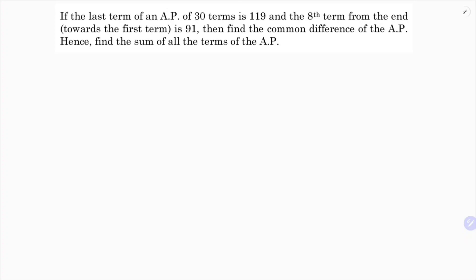The last term of an AP of 30 terms is 119. So there are 30 terms, and the last term a₃₀ is 119.